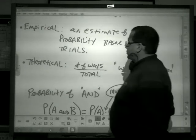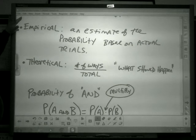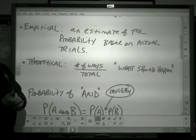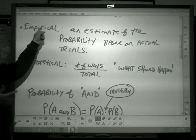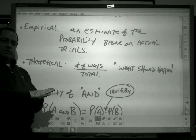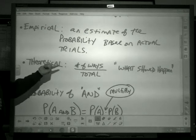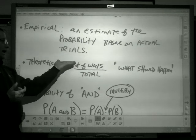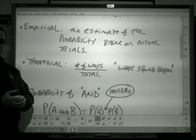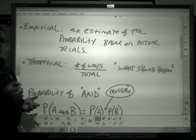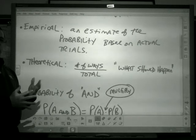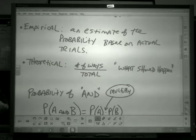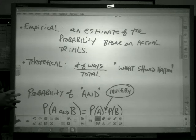So first two types: empirical, which is an estimate of the probability based on actual trials. So if I were to flip a coin 100 times, the probability that I would get heads empirically would be how many heads I got out of the 100. Theoretical is the number of ways that it should happen divided by the total. So theoretically, one out of every two outcomes should be heads. Empirical comes from data, from the actual trials. Theoretical is what we, in theory, expect should happen.